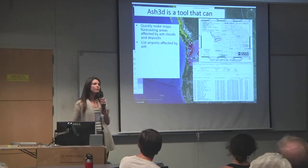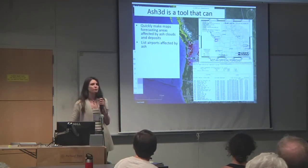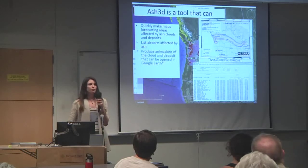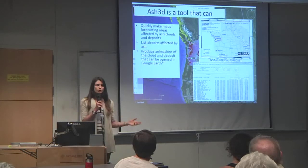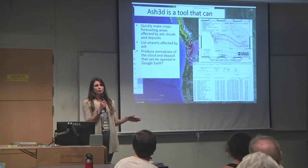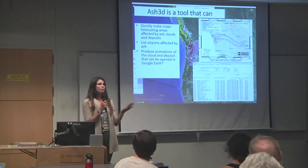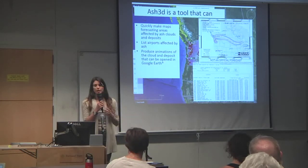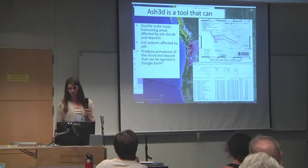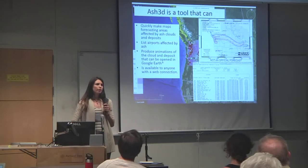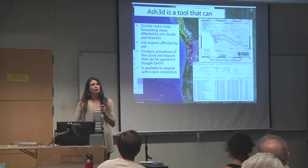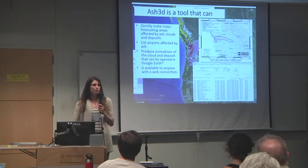It also produces a list of the airports that are going to be affected by the ash and for how long they're going to be affected. Another neat thing that people are starting to do for a bunch of different models is develop KMZ files that can be opened in Google Earth and read by a huge variety of different groups. This is the freely available web version of ASH3D that anybody can use as a research tool.